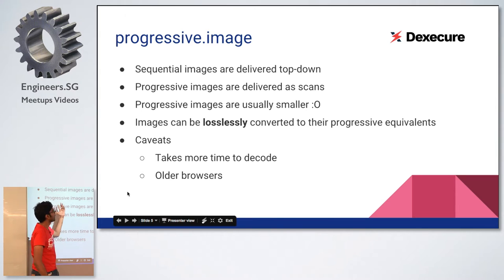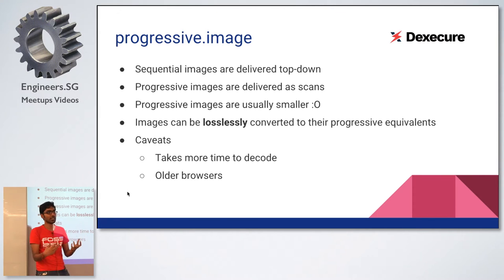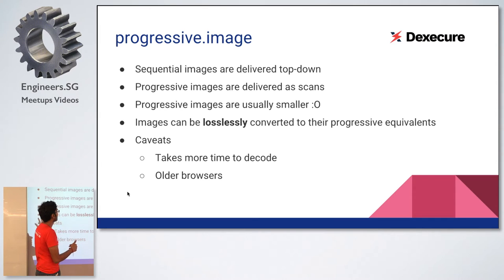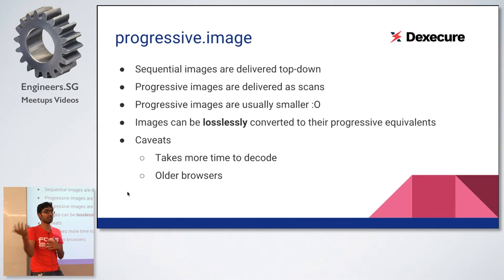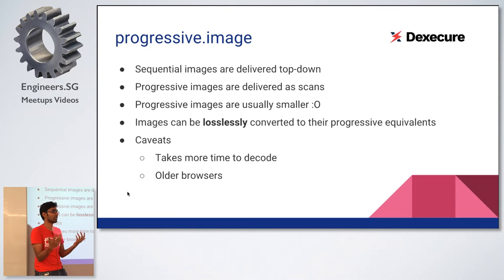Sequential images are delivered top-down, chunk by chunk. Progressive images are delivered scan by scan — first a low quality scan is sent to the browser, the browser decodes it, and as it gets more information you get a better resolution of the image. The cool part is that most progressive images are around 10 percent smaller than equivalently encoded baseline images, so they look better and are also smaller in size. Once both images have fully loaded, you won't be able to tell the difference — so it's a lossless transformation.